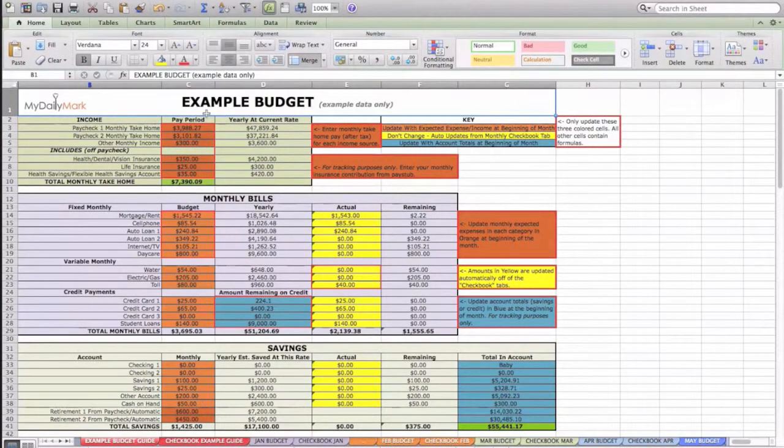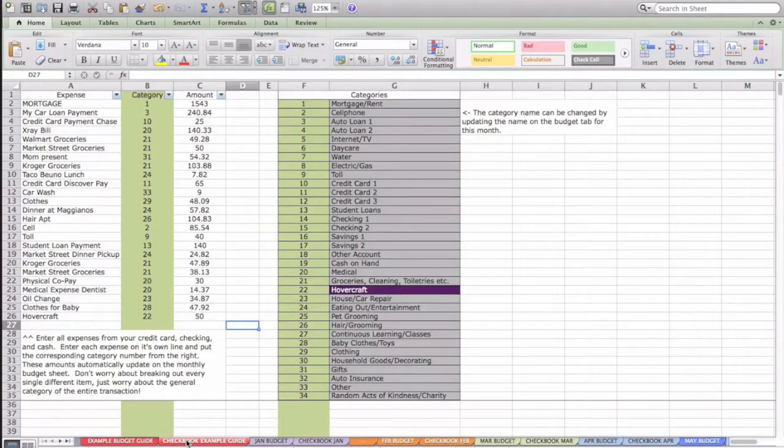So once you download the spreadsheet, you're going to be taken to a tab called Example Budget. I have two different examples on here so you can get a feel for the spreadsheet with some basic dummy data. You can see the Example Budget which you do at the beginning of the month, and then the Example Checkbook which you're going to be updating throughout the month. I have one of these for every single month - here's a January budget and checkbook for January.